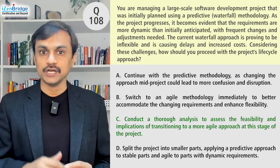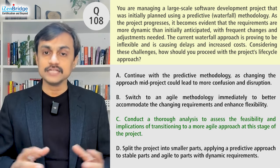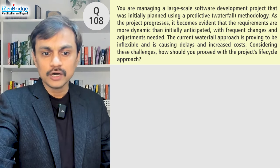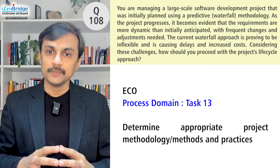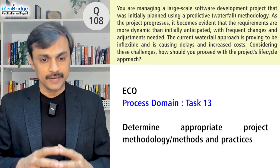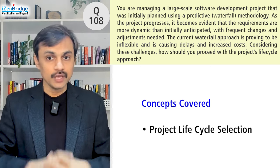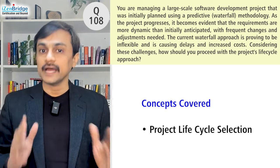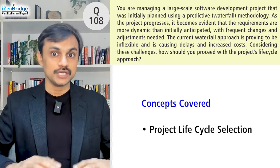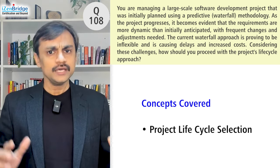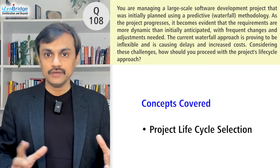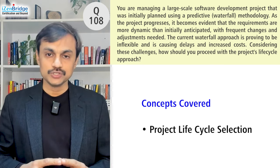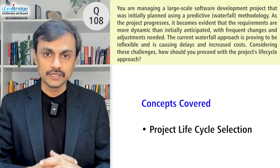Option C points out that we need adaptability and should figure it out together through proper analysis. This question focuses on Task 13 in the process domain: determine appropriate project methodology, method, and practice — specifically, project lifecycle selection. Some may assume that the project lifecycle is selected only at the beginning and cannot be changed. That is not correct. We are always here to change anything that helps us deliver project value. Yes, changing the lifecycle approach is a relatively big change — we won't do it casually — but if we have reasons and stakeholder alignment, why not transition to a better, more agile approach to facilitate value delivery.